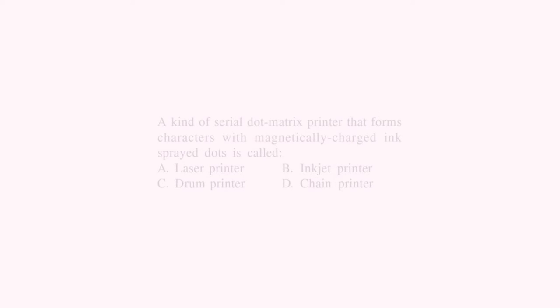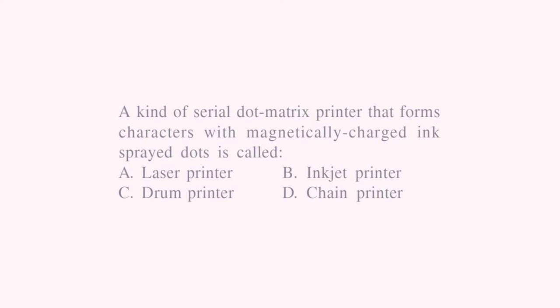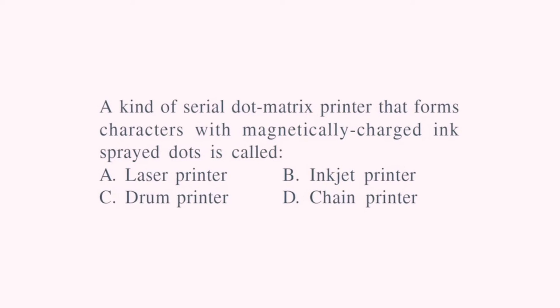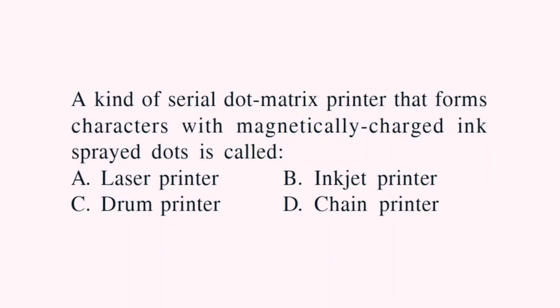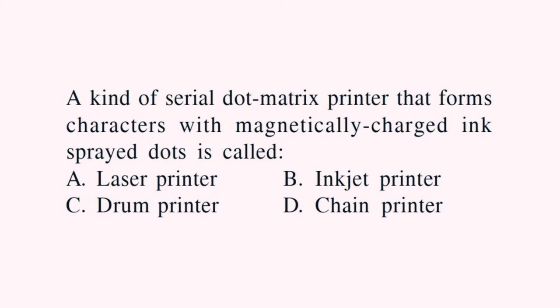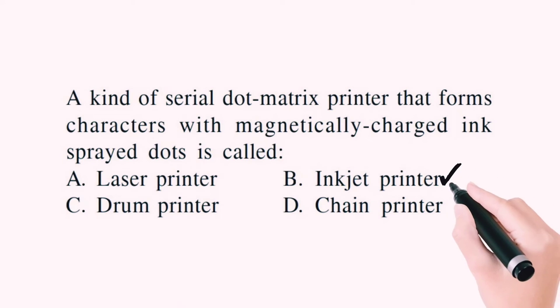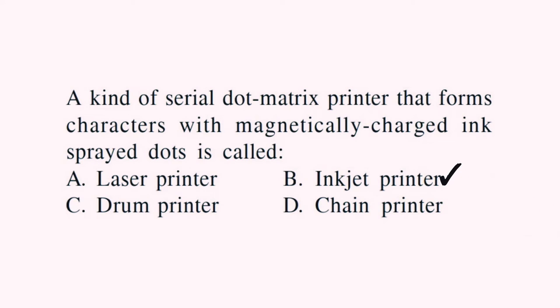Which is a kind of serial dot matrix printer that forms characters with magnetically charged ink spray dots? Dot matrix — no, that doesn't use magnetically charged ink. Inkjet printer — yes, it uses charged ink instead of a pen. The right answer will be B — inkjet printer.